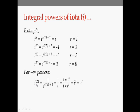For a negative power such as i^(−21), write it as 1 divided by i²¹. Express 21 as 4×5 plus 1, so the denominator reduces to i¹ = i, giving 1 over i. Multiply numerator and denominator by i³ so the denominator becomes i⁴ = 1. What remains is i³, which equals minus i.